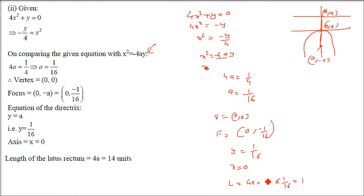The length of the latus rectum is 4a = 4 × (1/16) = 1/4.